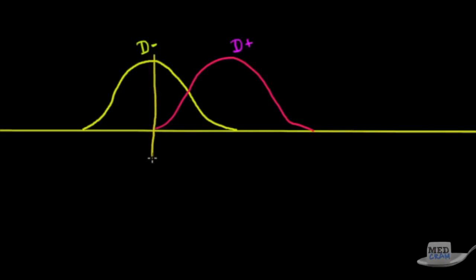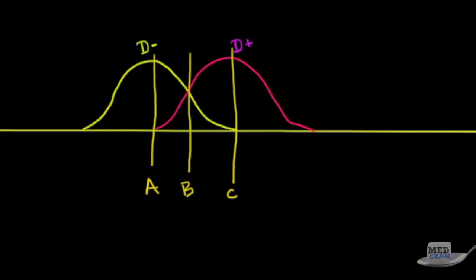There are several points where you could set the sensitivity: point A, point B, or point C. Everything to the right of a given point would be a positive test result, and everything to the left would be negative. The question often asked on tests is: which point represents the most sensitive test, and which represents the most specific test? Depending on which population a result belongs to determines whether it's a true or false positive or negative.